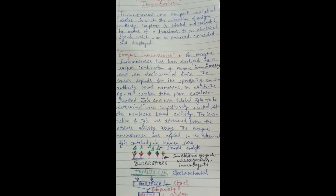It is identified by catalytically labelled IgG (immunoglobulin G) and non-labelled IgG — these are competitively reacted with the membrane-bound antibody. The concentration of IgG is determined from the catalytic activity assay. The enzyme immunosensor was applied to the determination of IgG contained in human serum.